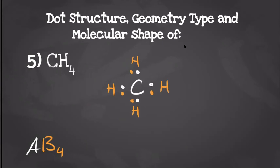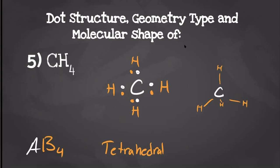Very similar to our last one, looking at our dot structures might not help us find whether it's polar or non-polar. When we look at our molecule, each hydrogen is going to be pulling down along with whatever direction they're facing — whether it's right, left, or behind the page. Those diagonals are going to cancel out, and the hydrogens being pulled from below and above the page are going to cancel out because it's going to be the same strength. It's going to give us a non-polar molecule.